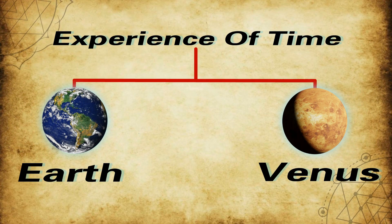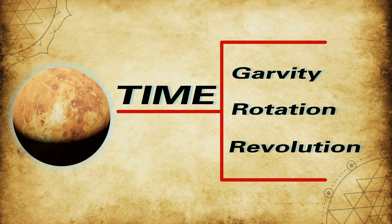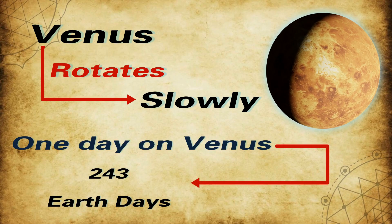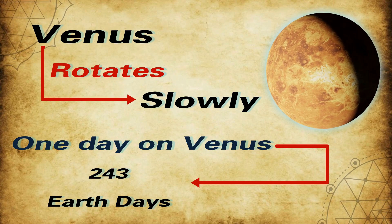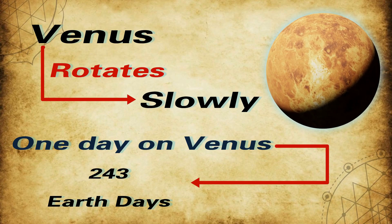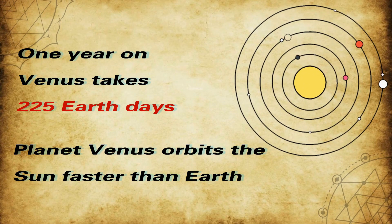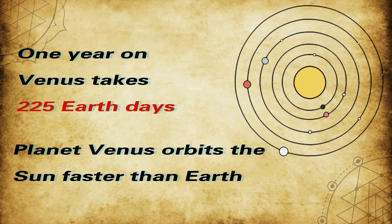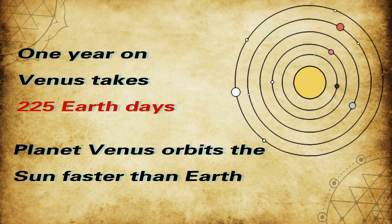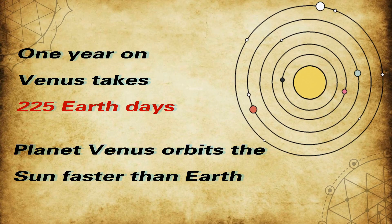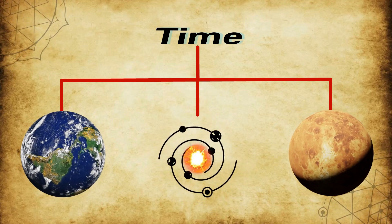So the time we experience on Earth is different than the time on Venus. Why? Because the gravity, rotation, and revolution of Venus is different. The planet Venus rotates very slowly on its axis. Because of that reason, one day on Venus lasts 243 Earth days. That means sunrise to sunset in Venus will take 243 days. But the planet Venus orbits the sun faster than Earth. So one year on Venus takes only about 225 Earth days. Because of that, in Venus, day is longer than its year. So time is different on other planets, solar systems, and other galaxies.